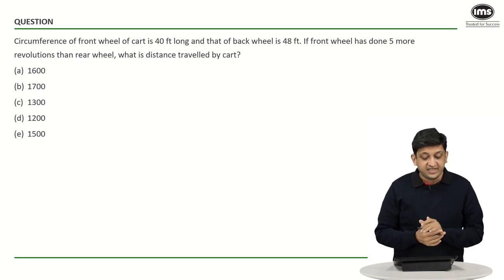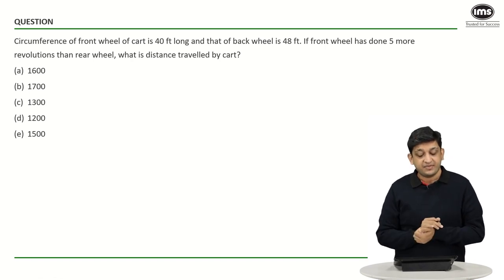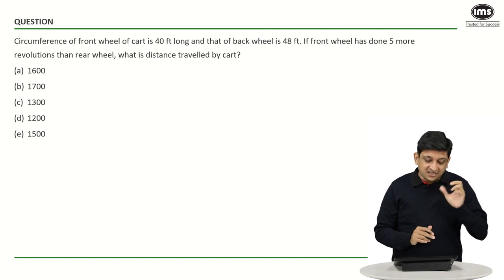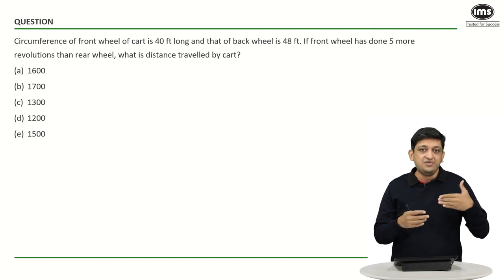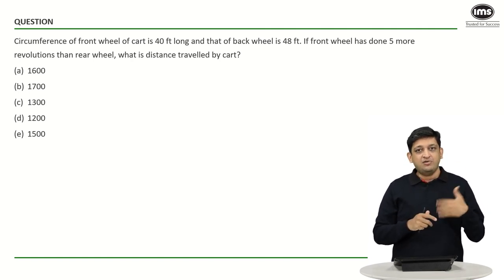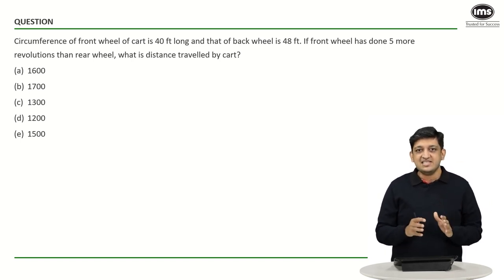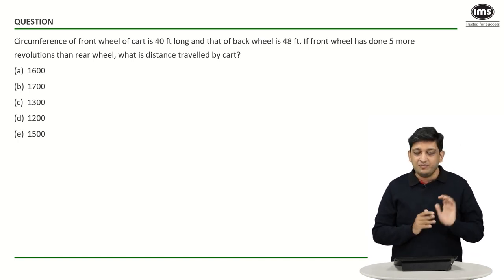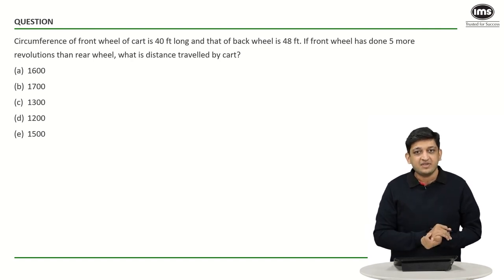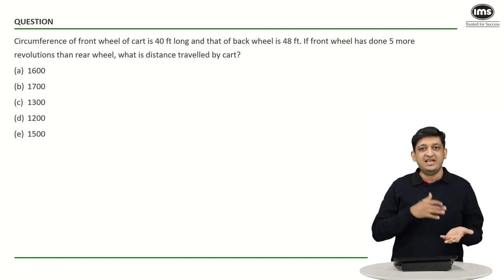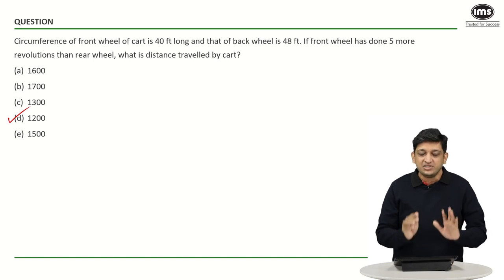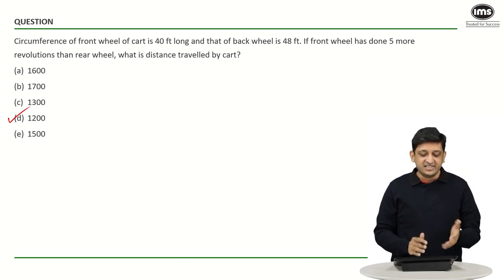In this question, the circumference of the front wheel of the cart is 40 feet and that of the back wheel is 48 feet. If the front wheel has done 5 more revolutions, what is the distance covered by the cart? The circumference of 40 feet is the distance covered when the front wheel makes one rotation; 48 feet when the back wheel makes one rotation. You can trust the paper setter to give you good numbers — the distance covered should be a multiple of 40 as well as 48. Looking at the options, the obvious multiple of the LCM of 40 and 48, which is 240, gives you 1200. If extremely short on time, you can just mark 1200.